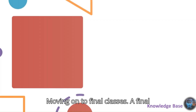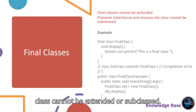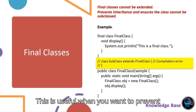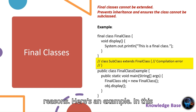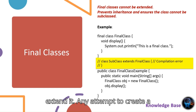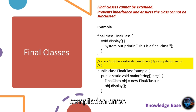Moving on to final classes. A final class cannot be extended or subclassed. This is useful when you want to prevent inheritance for security or design reasons. Here's an example. In this example, the class is declared as final, which means no other class can extend it. Any attempt to create a subclass of a final class will result in a compilation error.